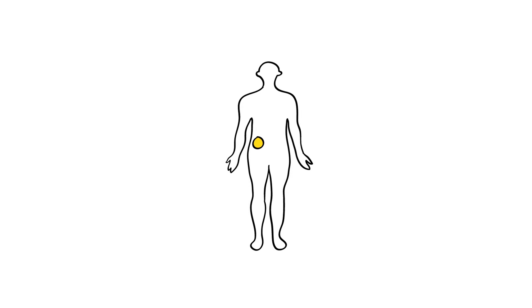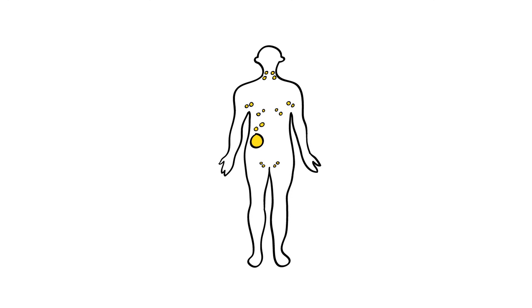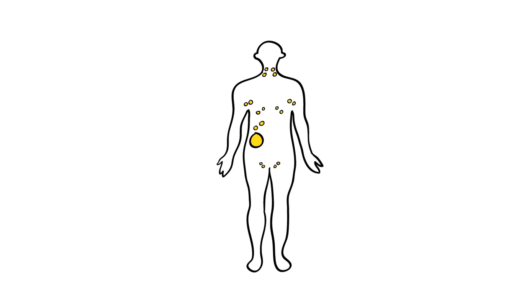Cells that are cancerous, however, can grow into nearby tissues and spread to other parts of the body. Cancer cells that spread to other parts of the body are called metastases.